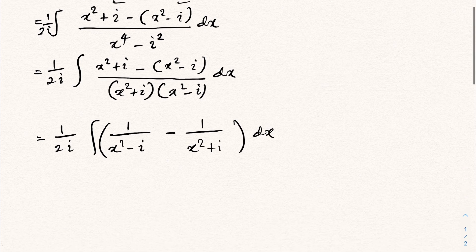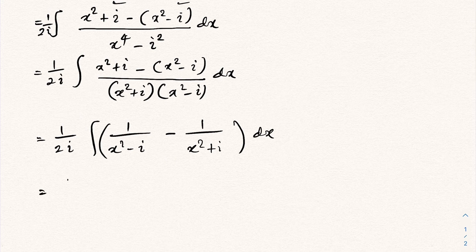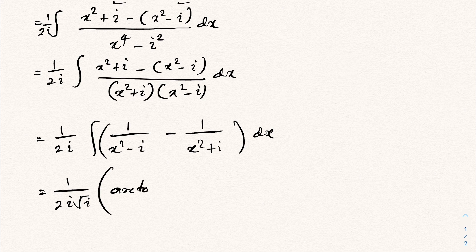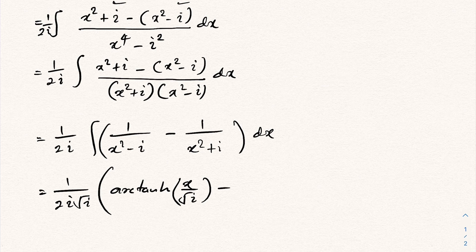Then we can integrate: one over 2i square root of i, which equals hyperbolic arctangent of x over square root of i minus arctangent of x over square root of i plus C.